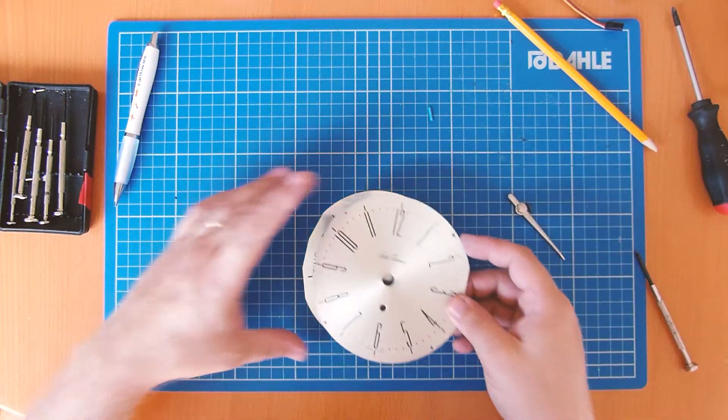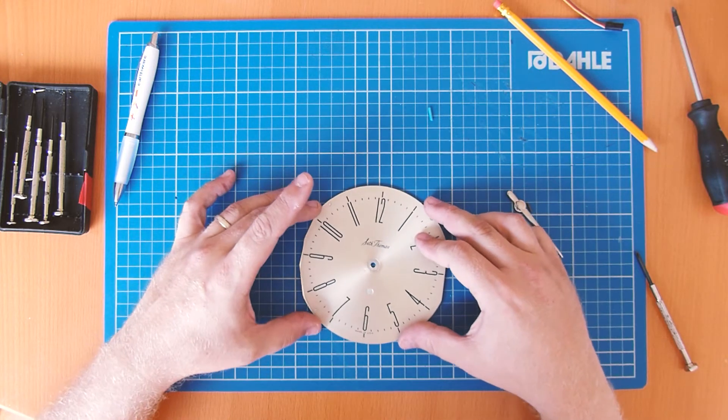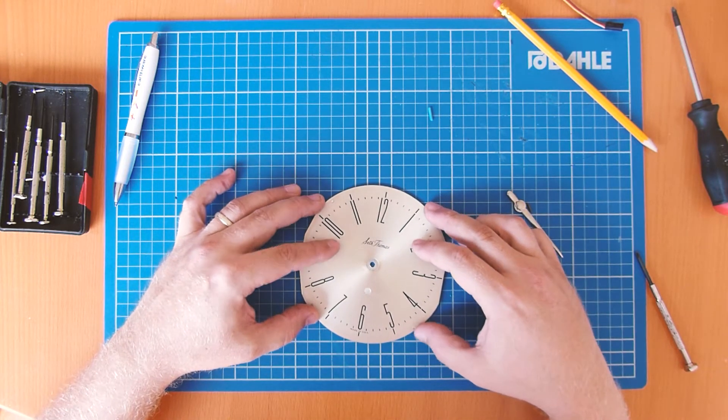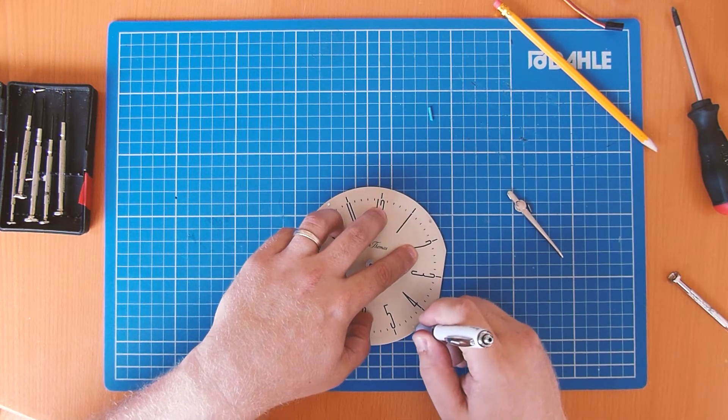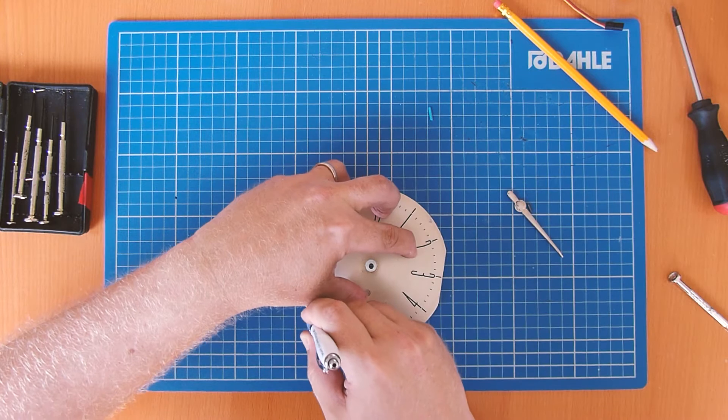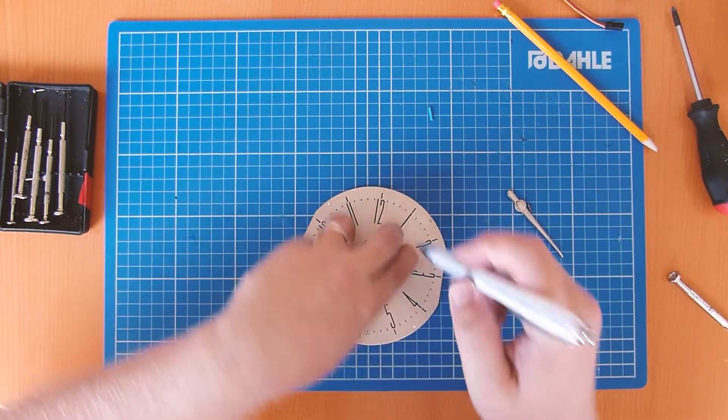So then we moved on to the clock face. We put the old clock face over the new one, lined up the little four holes that are in the corner, we've got the original four screws, and this screws it onto the front of the clock, so we marked those just in the corners. Much easier doing this than trying to guess where they are, so it's quite handy to have it all around to do.